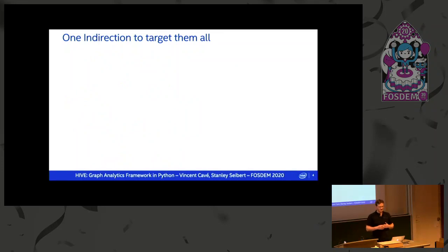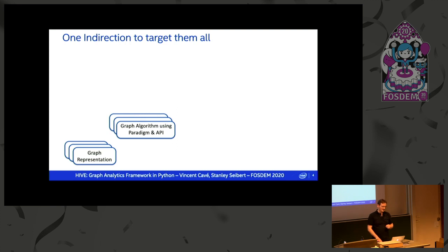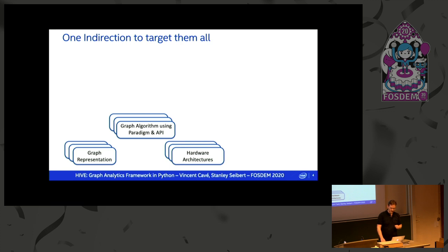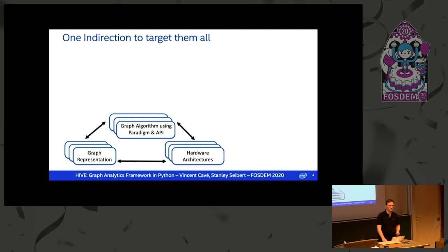Let's start at the basics. If you want to express a graph algorithm, you're going to need data for graph representation. You're going to express your graph algorithm using a paradigm — for instance, you can express a graph algorithm with linear algebra, or a vertex-centric, bulk-synchronous kind of model where you have data from your neighbors, and so on. Someone provides you with an API, you follow that paradigm, and then you implement your graph algorithm. And you need the hardware architectures that you can run on. All of these things are interrelated.